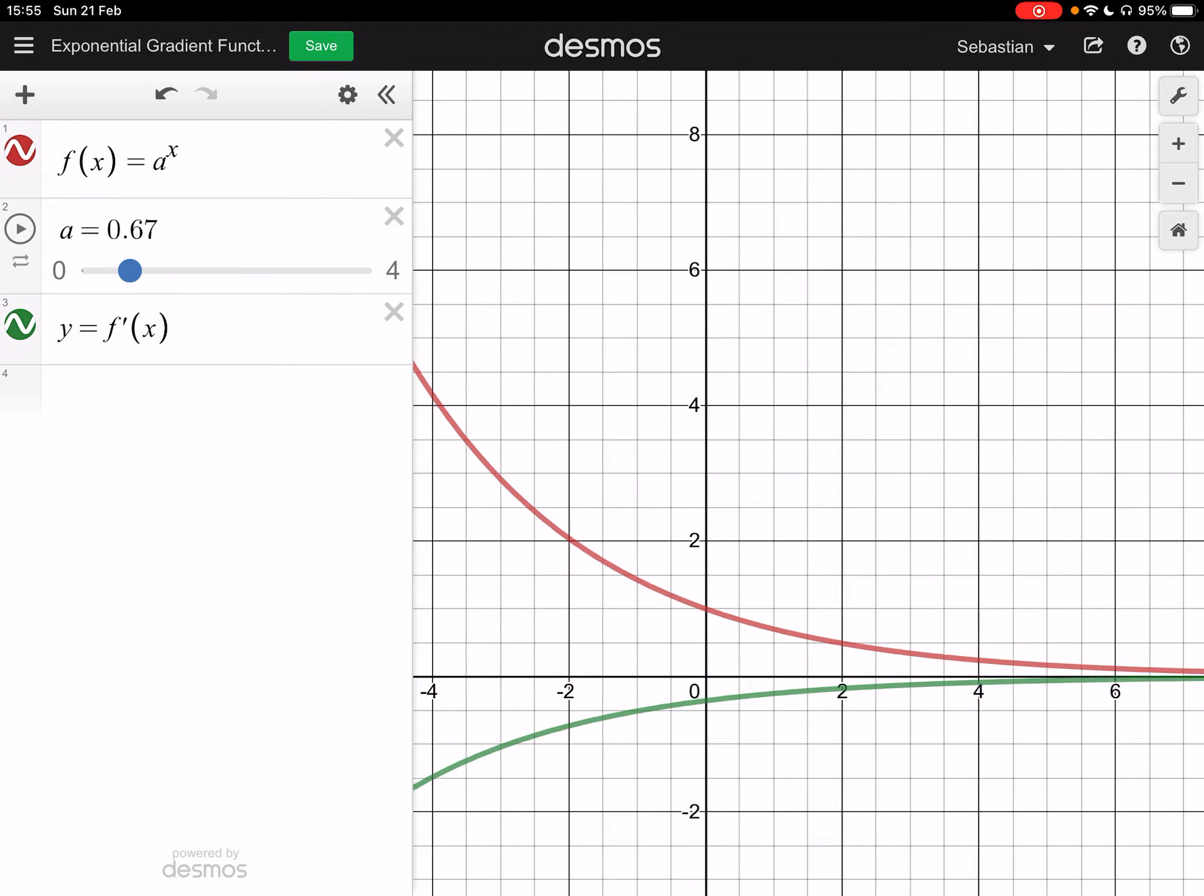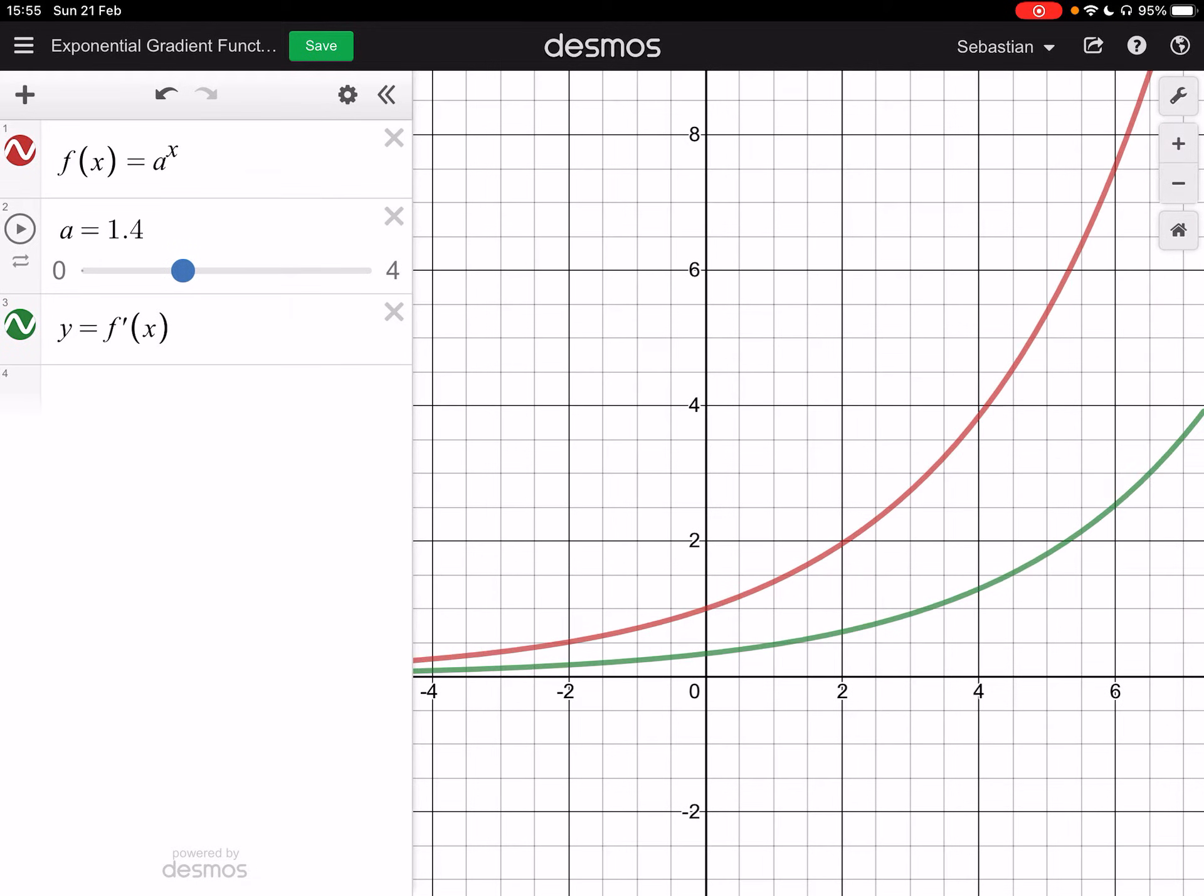Now, if I make a less than one, you can see that the gradient function is negative, it's a decreasing function, but we're not that interested in this side. I'm going to be more interested in what happens when I increase a. So when I increase a, you can see that the gradient function is also sort of starting to kind of catch up with it. And as I keep making a get bigger, the gradient function, at one point, overlaps it, and then the gradient function overtakes it.